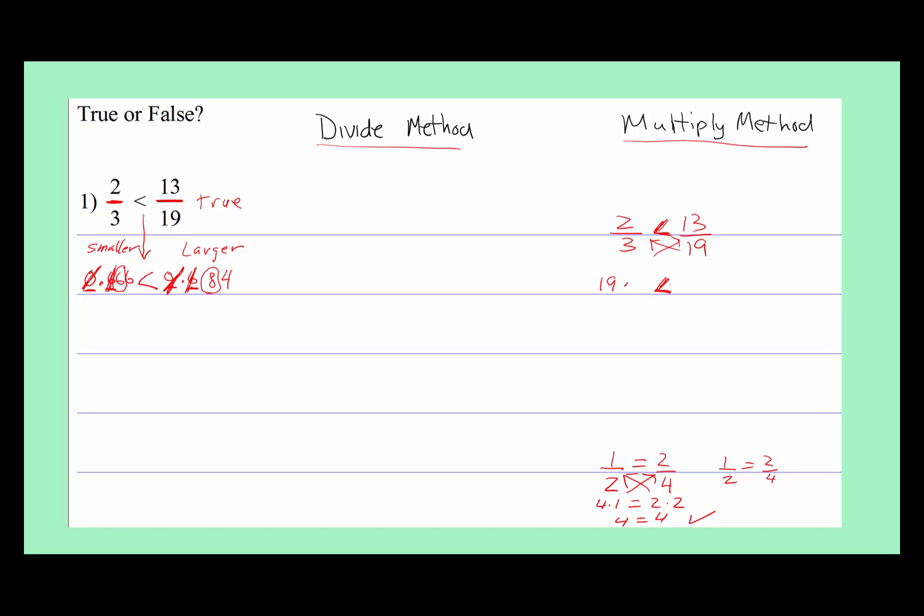On the left side, it becomes 19 times two. On the right side, it becomes 13 times three. And then, either long multiplication or the calculator, 19 times two is 38. Thirteen times three is 39. And then, look at this one is really easy to see. Thirty-eight is less than 39. Therefore, two-thirds is less than 13-nineteenths. True.